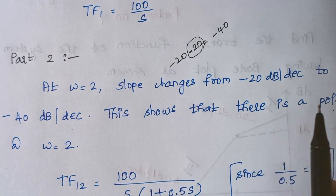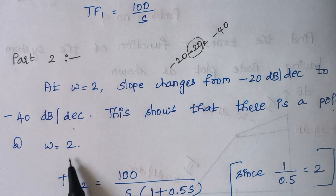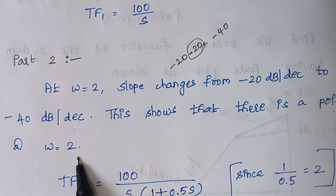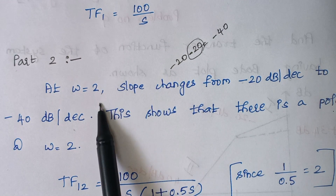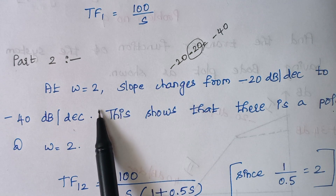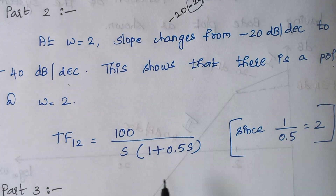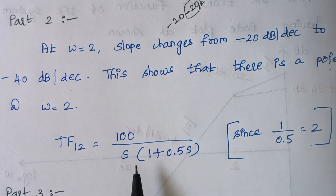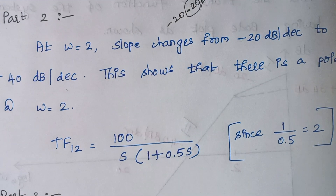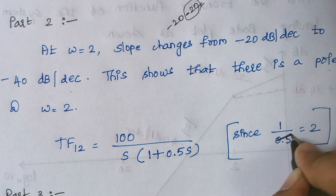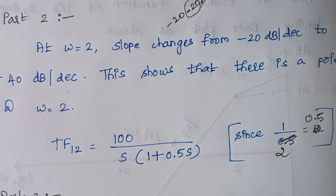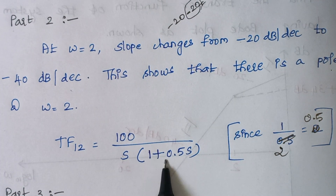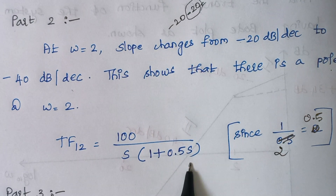This shows that there is a pole at omega equal to 2. How do we represent that? We know that at a frequency of 2 the slope changes, so just take the reciprocal: 1 divided by 2 gives 0.5. While representing the term, we write it as 1 plus 0.5S in the denominator.